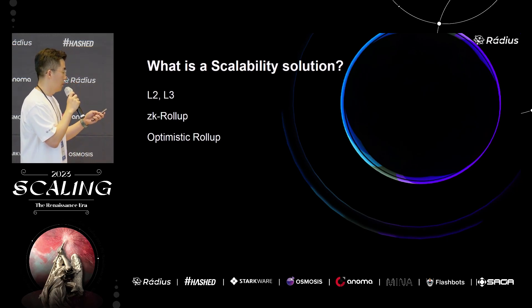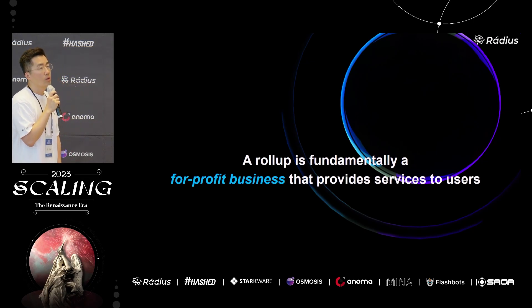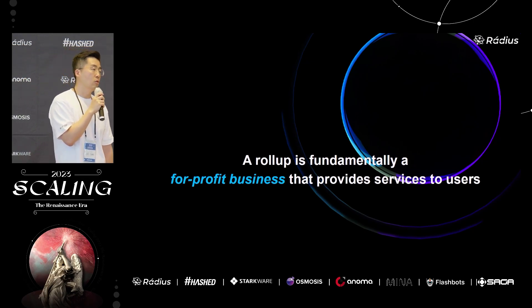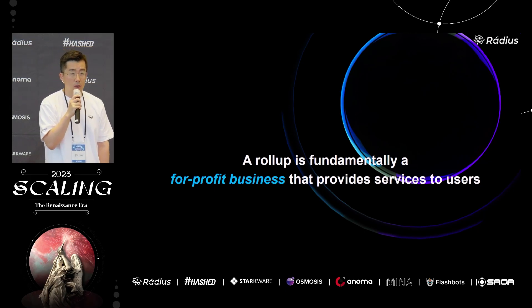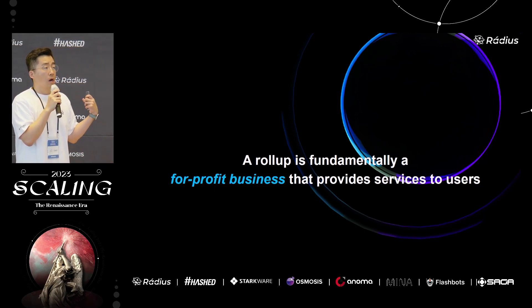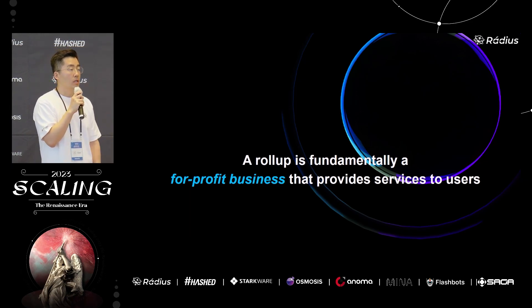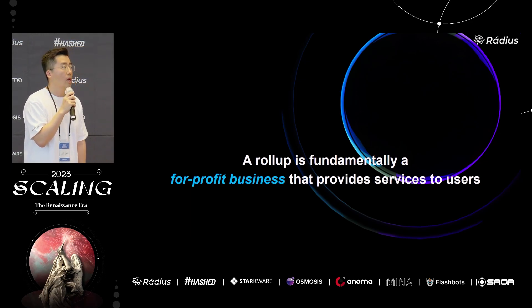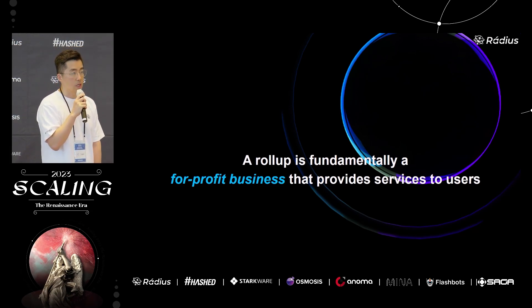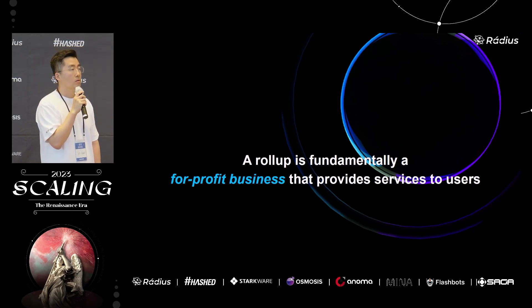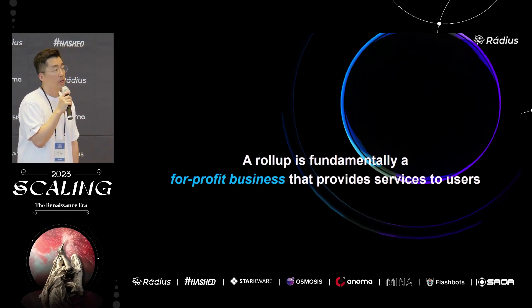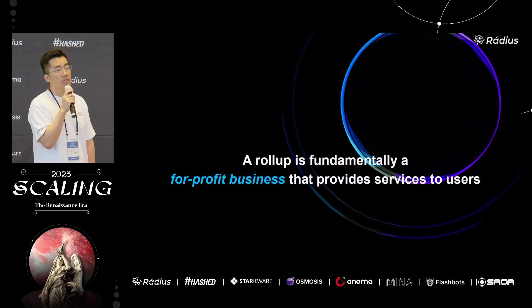Today's talk is about rollups. We think that rollups are not just technical concepts or scaling solutions, but also a for-profit business that provides services to users. When dApps want to build something on-chain, they can use smart contracts. But when developers implement smart contracts on rollups, they need to consider additional design choices like economics, not just business logic.